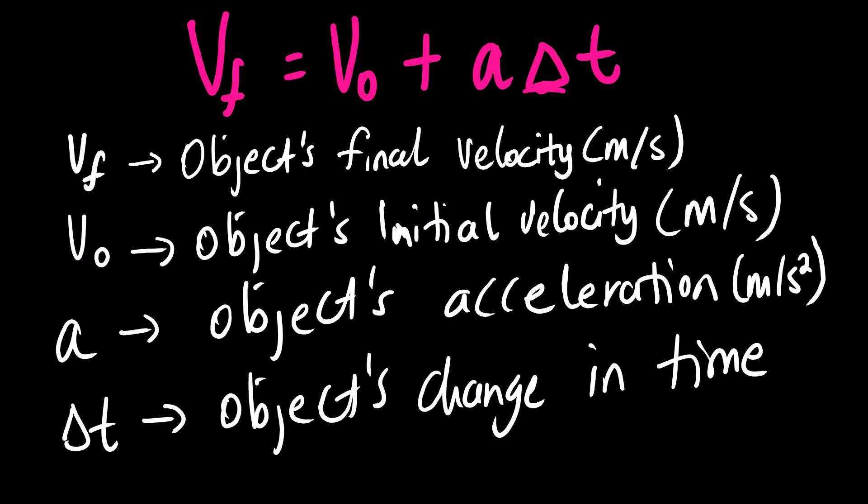The first equation is VF equals VI plus A times change in time. Now VF stands for the object's final velocity, with SI unit meters per second. VI is the object's initial velocity, also measured in meters per second. A is the object's acceleration in meters per second squared, and change in T is the object's change in time, measured in seconds. We are done with the first equation.